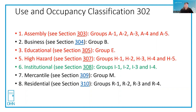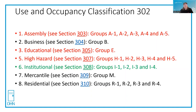Last but not least, we have institutional occupancies, which are considered lower risk. That's because these are fully sprinklered buildings where the presence of staff will help evacuate the patients who are not capable of self-preservation, or the inmates in the case of a correctional facility. They're not able to just exit whenever they want to, so staff would assist them in moving to an area of refuge or a place of safety while they await further instructions.